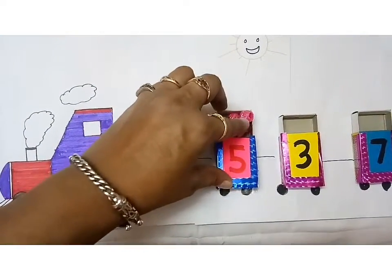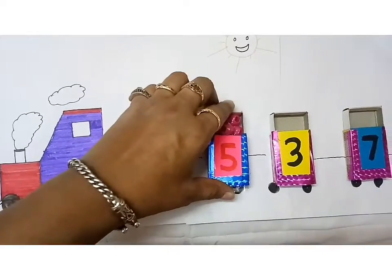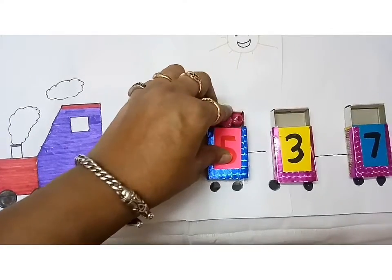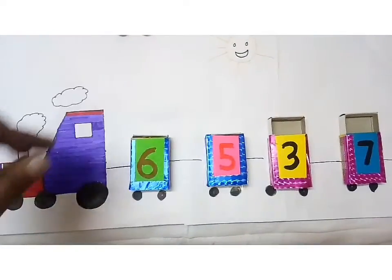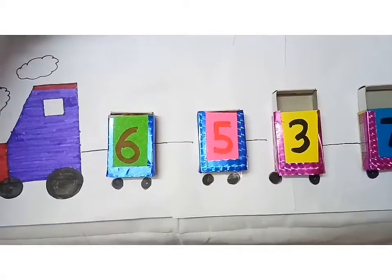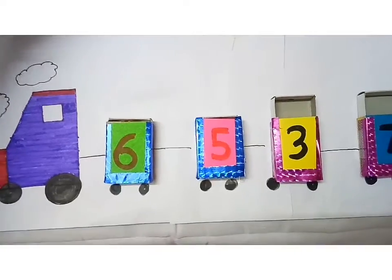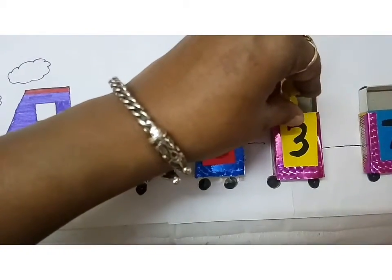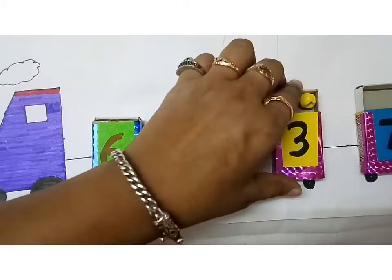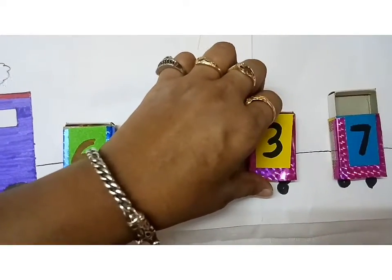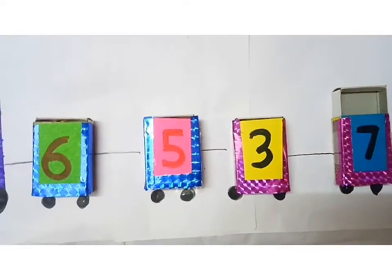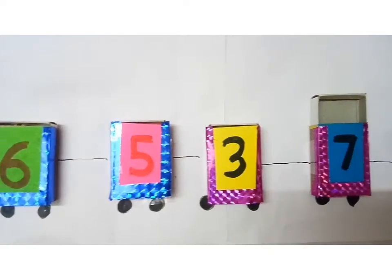Now you can see the other number written, it is three. Now let us count three beads and put in the box of three. One, two, and three. So I have placed three beads. Now let us move to our number seven.